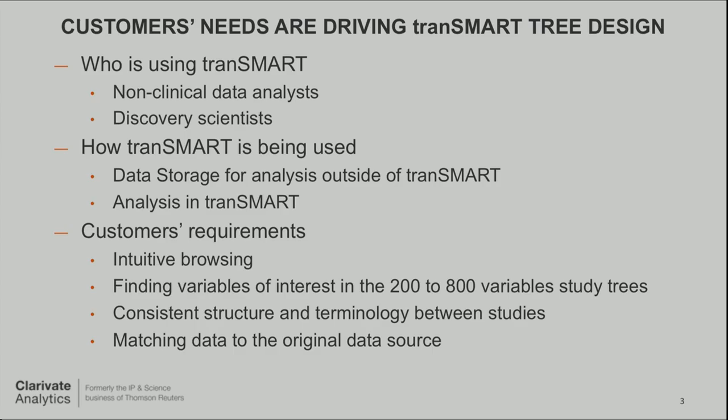What do they want? First of all, they want to find the data — because we upload 200 to 800 variables per study, and they want to find the right variables to analyze and either use them to select subsets in TransMart or download them for other analysis. They also want to match data to the original source, and they want consistency between studies.